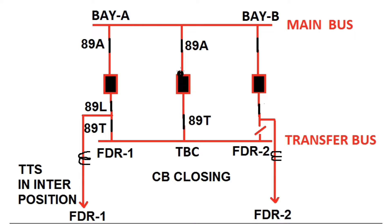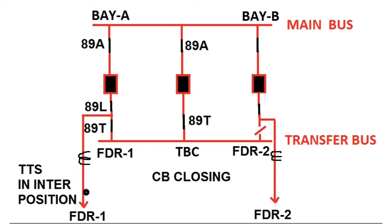After the TBC breaker is closed, the main bus and transfer bus are coupled by this TBC bay. Now 89T is closed, so these two bays will be in parallel condition. Now we can open the breaker of feeder 1 and power will be diverted via the TBC bay towards the main bus. Feeder 1 will get power through the main bus, through the TBC, then through the transfer bus, and via this isolator power will go to feeder 1 uninterruptedly.